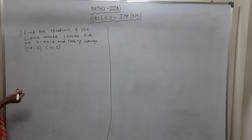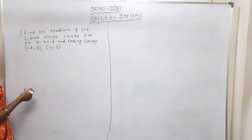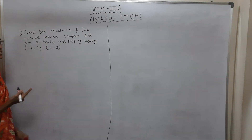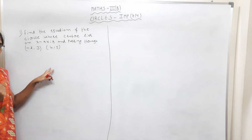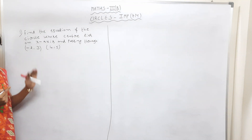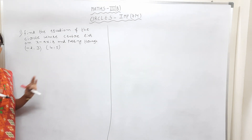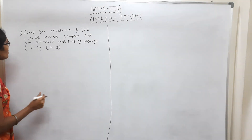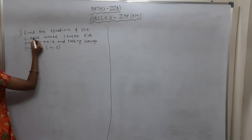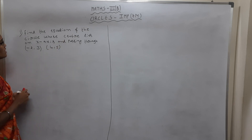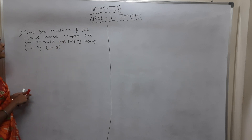Welcome to Six-Shot Math Academy. We have four methods and four sums. Find the equation of the circle whose center lies on the x-axis and passing through the points.